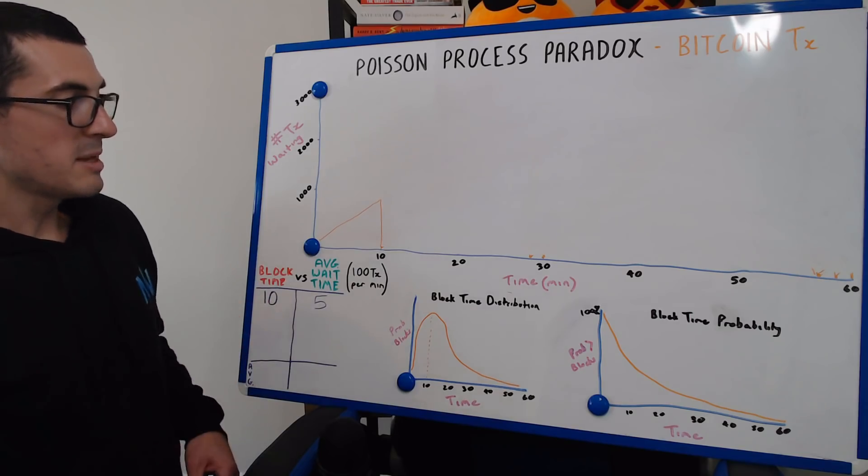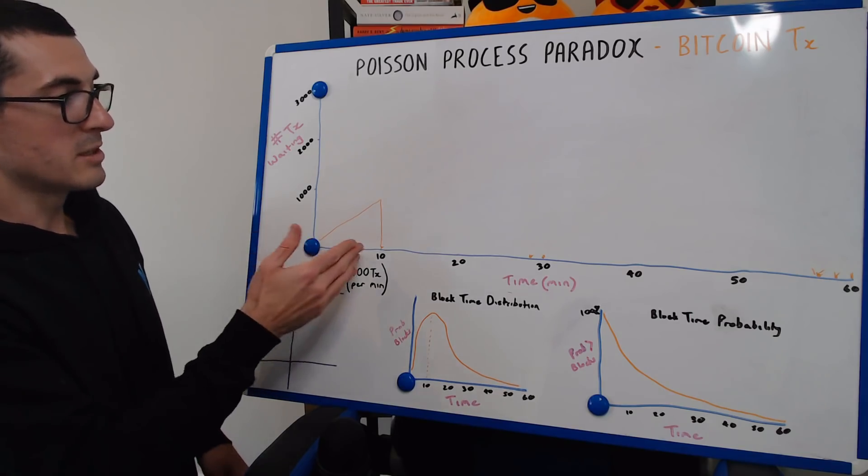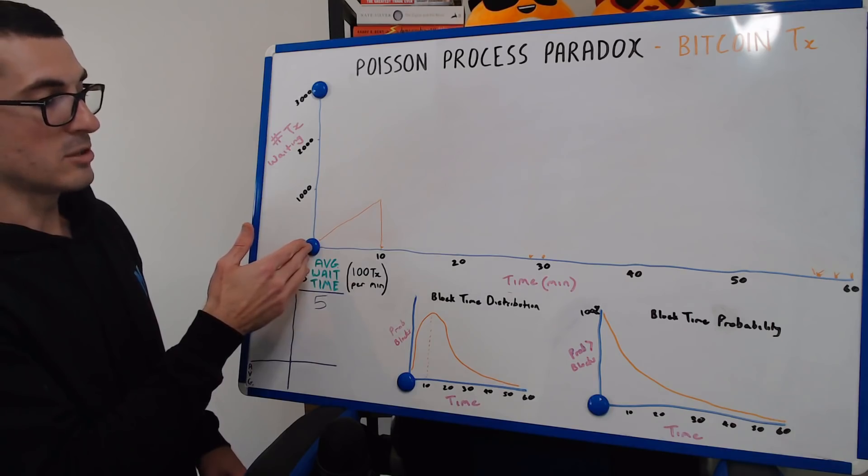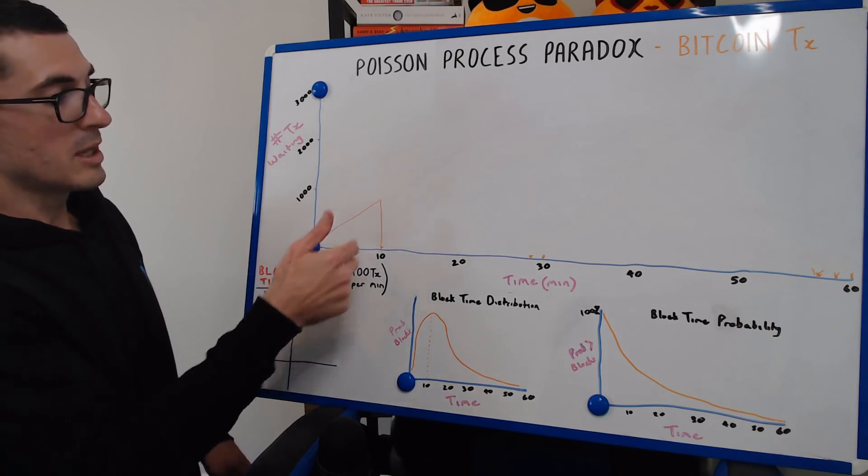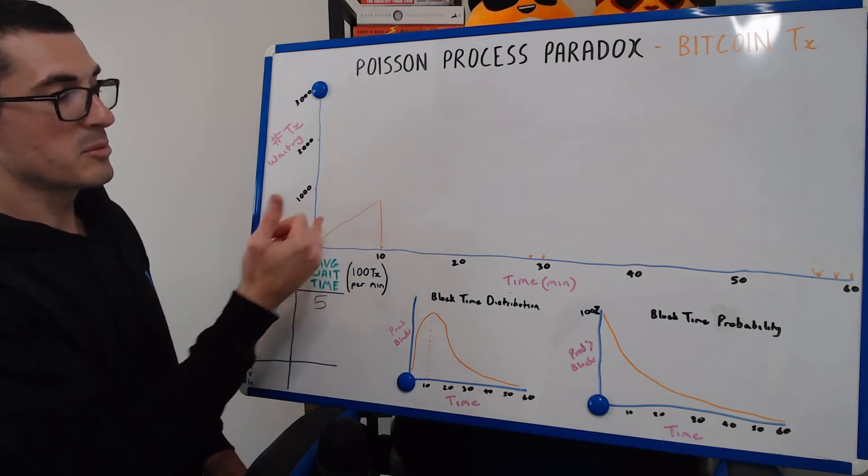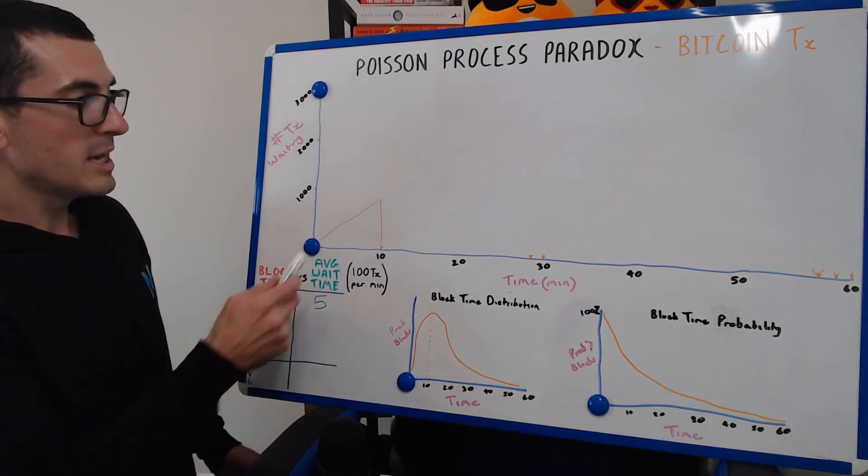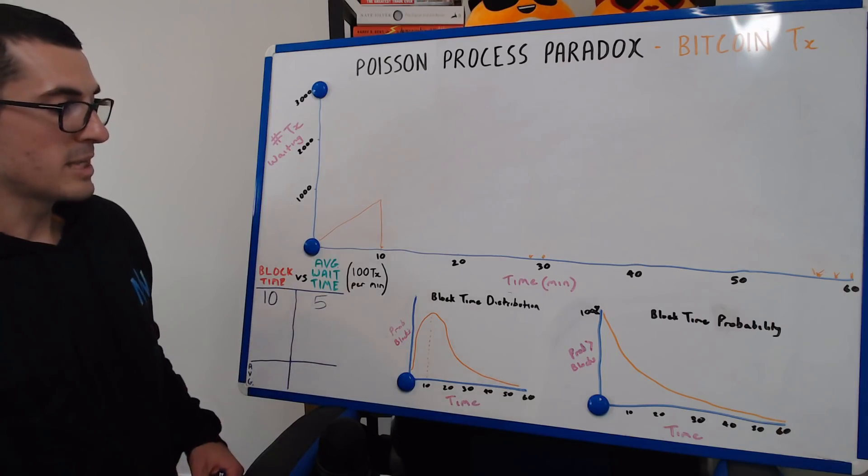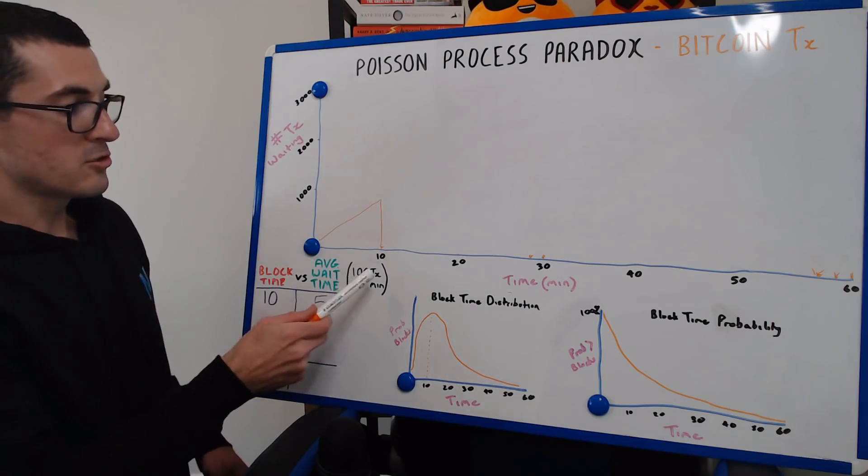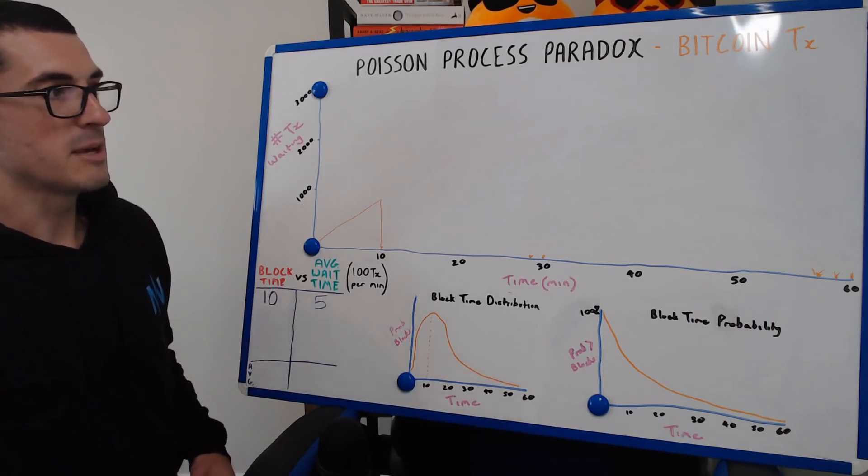So the block time was 10 minutes, and no person waited longer than 10 minutes to be included, and we had a lot that were a lot less than that, because these people at, say, the 9-minute mark only had to wait 1 minute. So the average time waited is halfway there at an average wait time of 5 minutes, assuming those transactions are constant in this example.